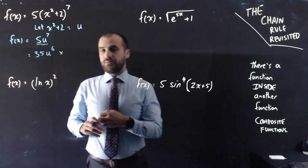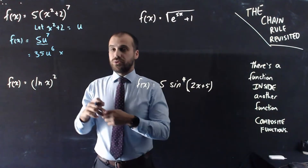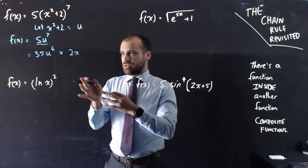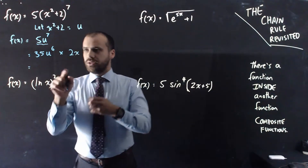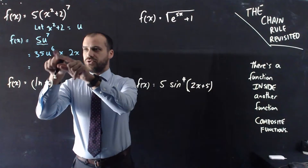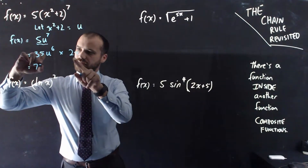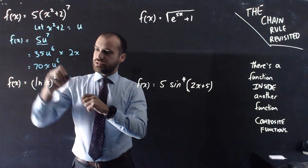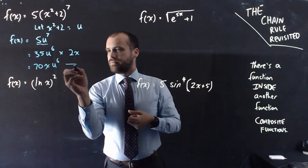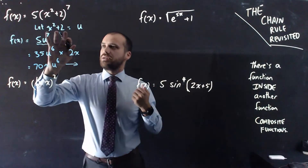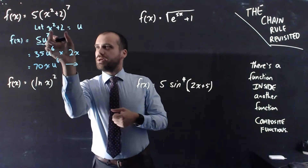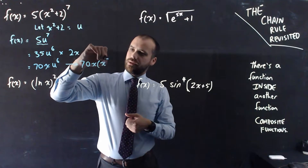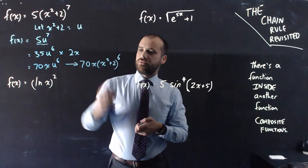And then we need to multiply it by the derivative of u — that's x squared plus 2 — so we're multiplying it by 2x. The result is 2x times 35u to the 6, which gives us 70x times u to the 6. Then, as our final step, u is not just u — u is x squared plus 2. So I can substitute back and get 70x times (x squared plus 2) to the power of 6.